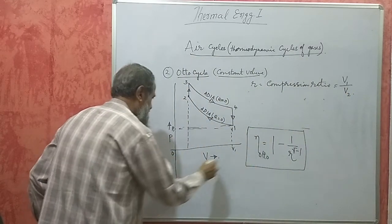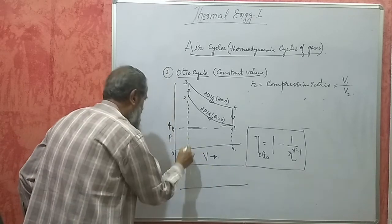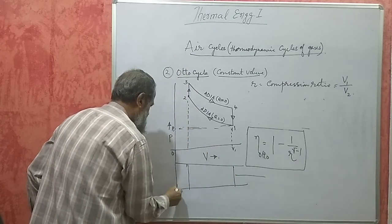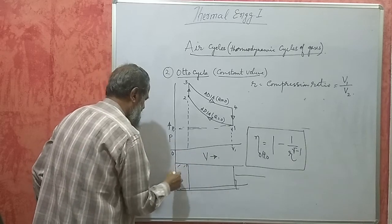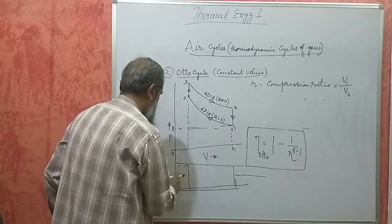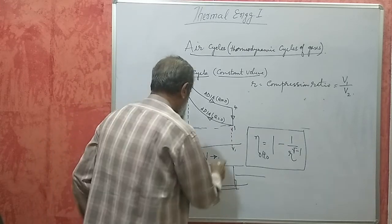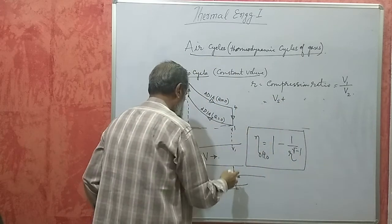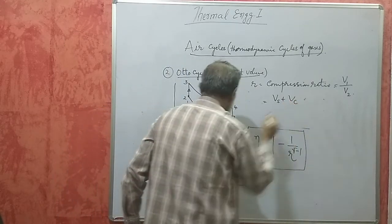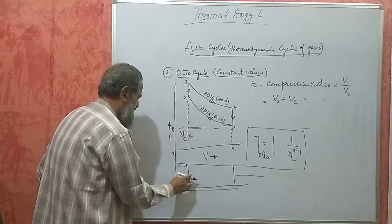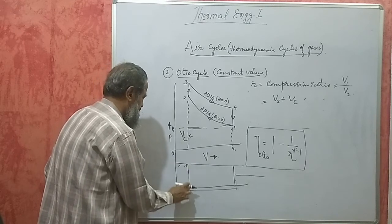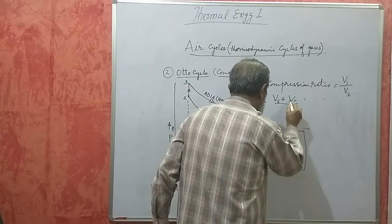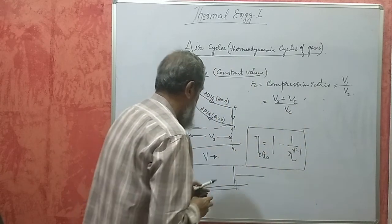The compression ratio R = V1/V2. If we consider the cylinder, V1 is the volume at the beginning of the compression stroke, and V2 is the volume at the end of the stroke. V1 = swept volume (Vs) + clearance volume (Vc), so R = (Vs + Vc) / Vc. The swept volume is Vs = (π D² / 4) × L, where D is the cylinder diameter and L is the stroke length in meters.